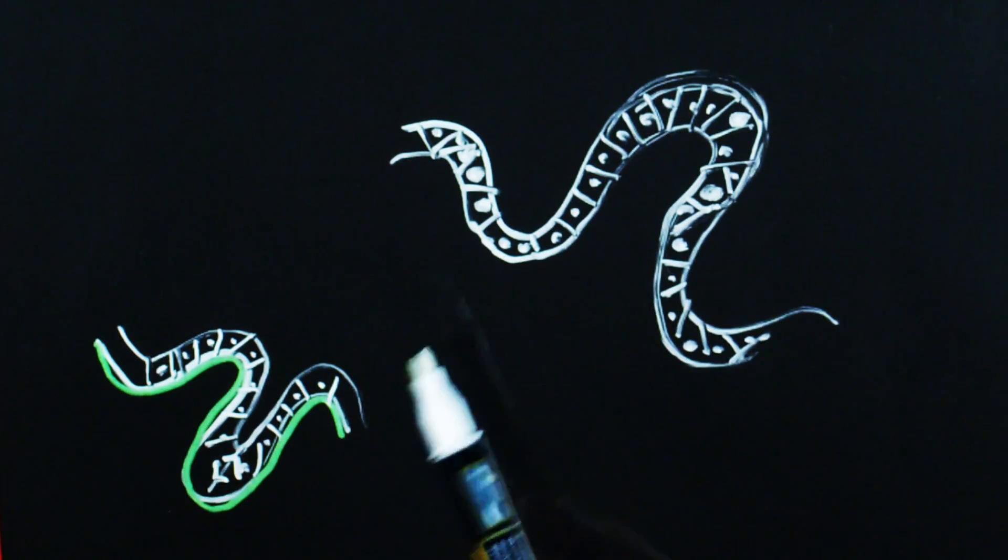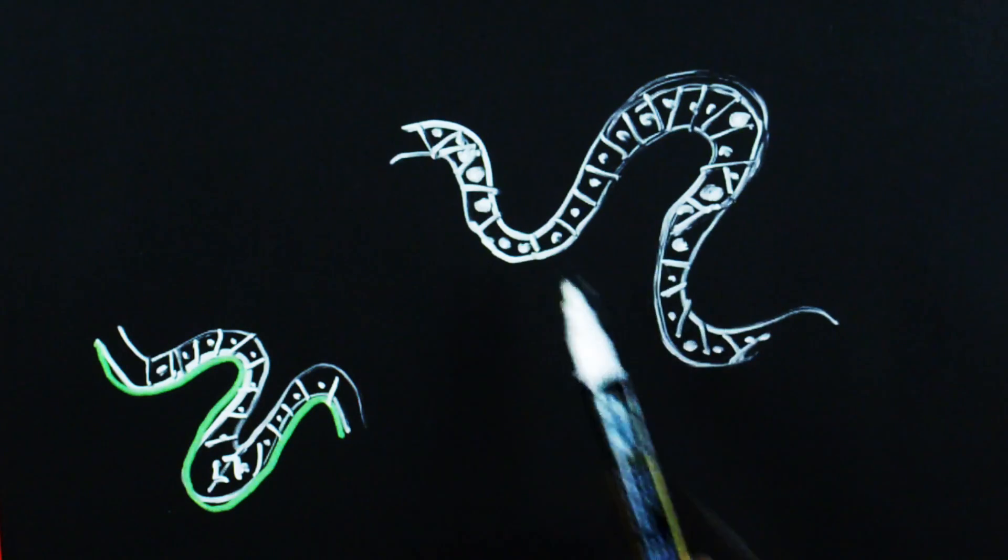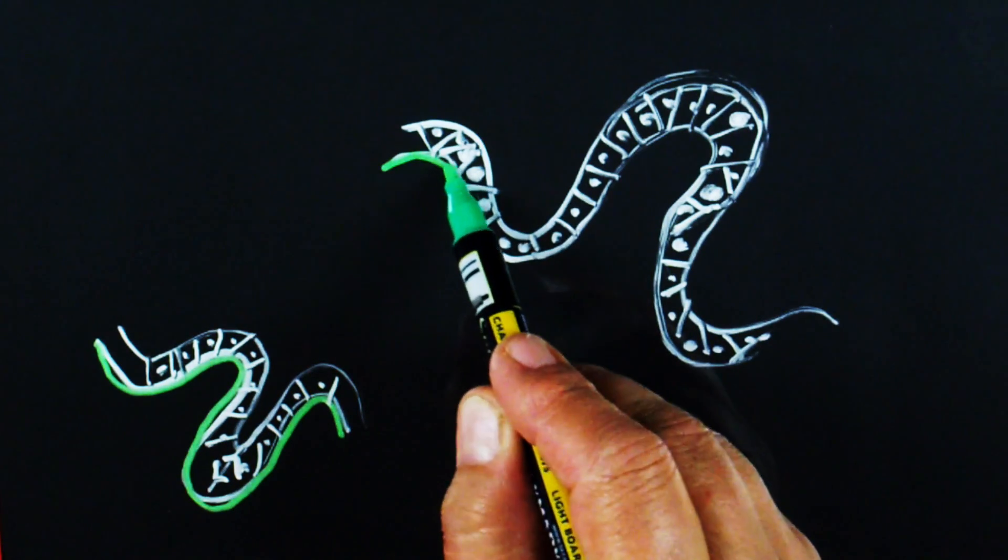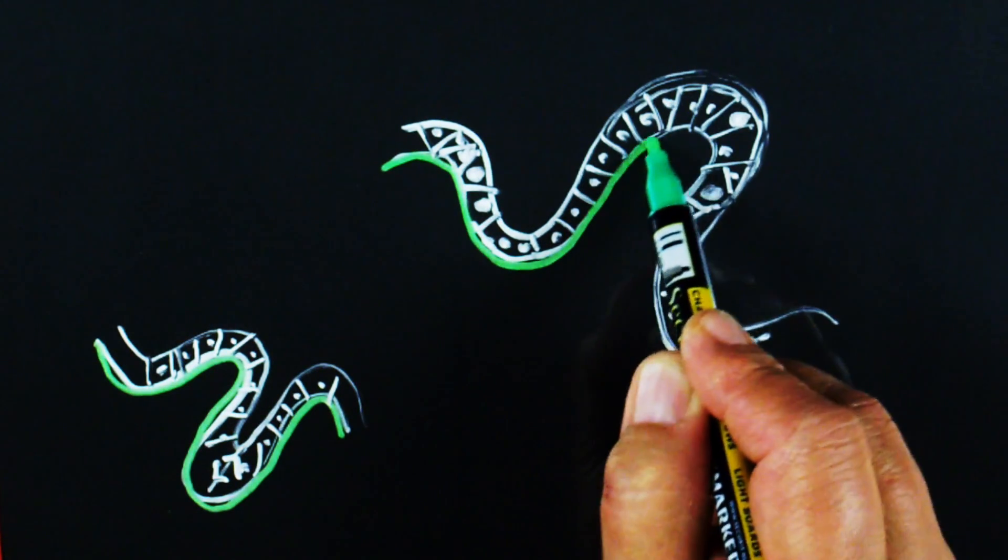So here then is our dysplastic epithelium thrown up into this polyp-like structure with an abnormal maturation of the epithelial cells. And critically, the basement membrane remained intact.